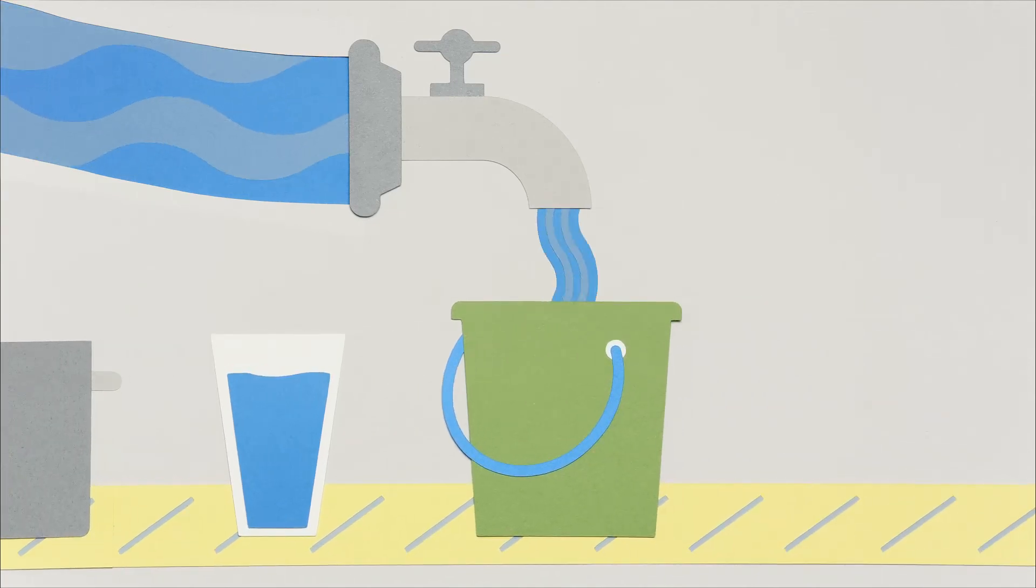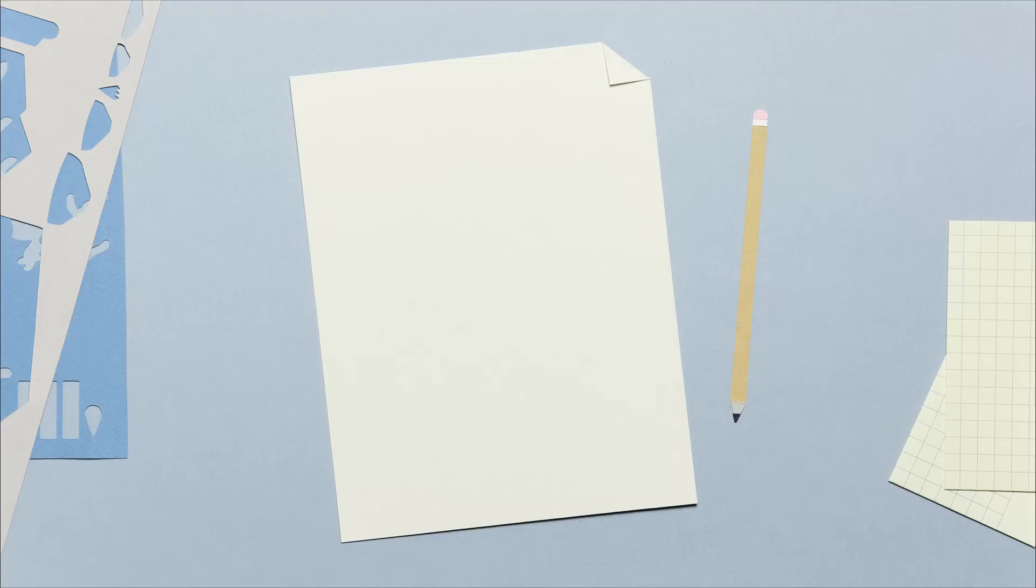Because the agriculture industry keeps the Bow River cleaner, water treatment plants have less work to do to provide clean water. Can you think of other innovations the agriculture sector has made to improve water quality?